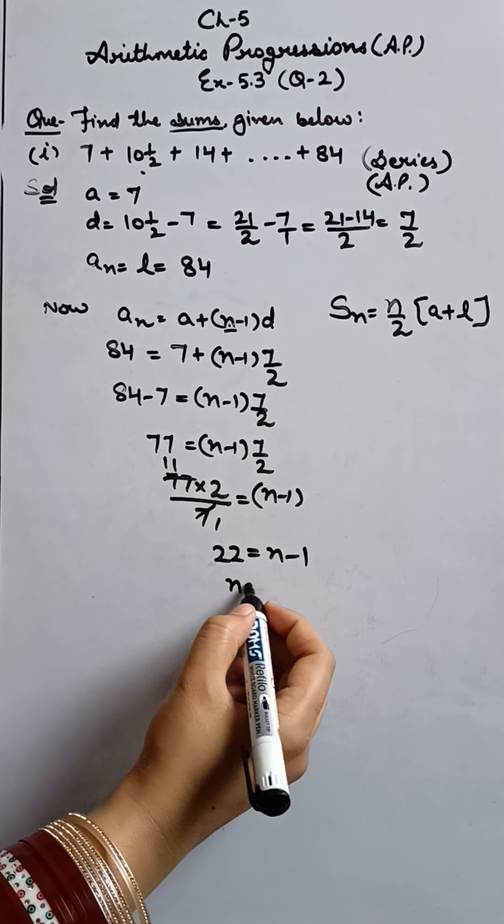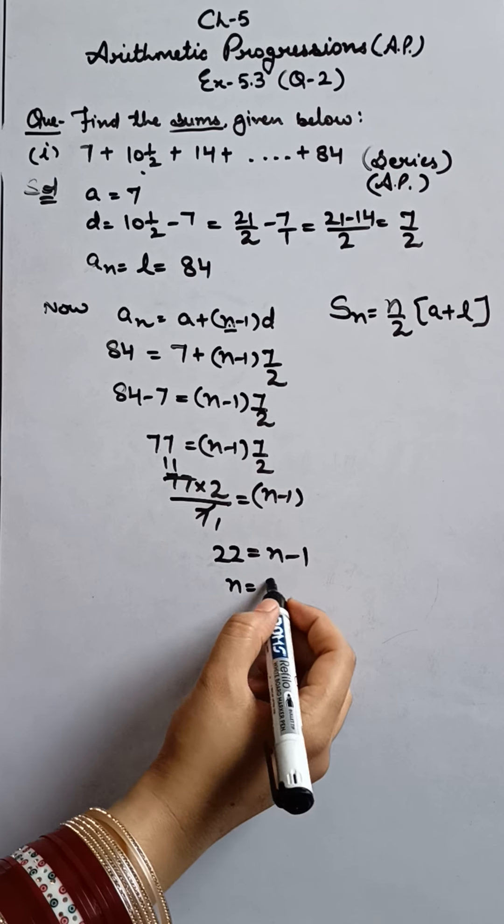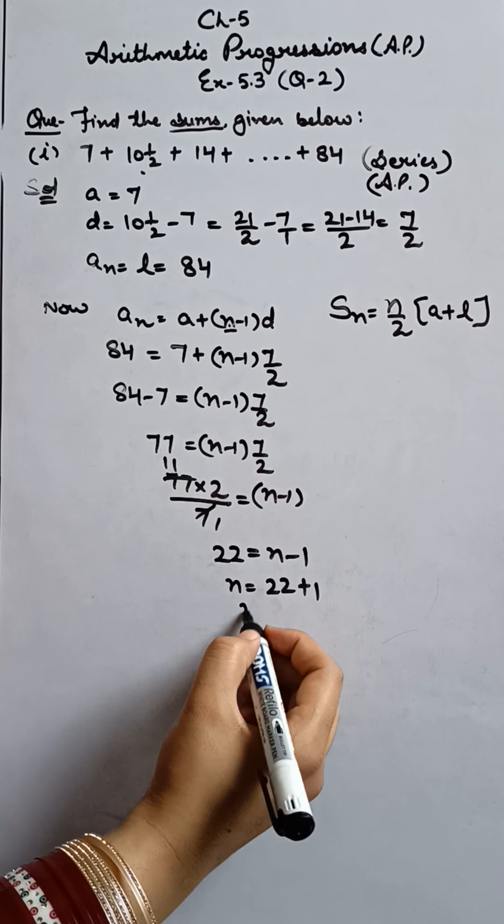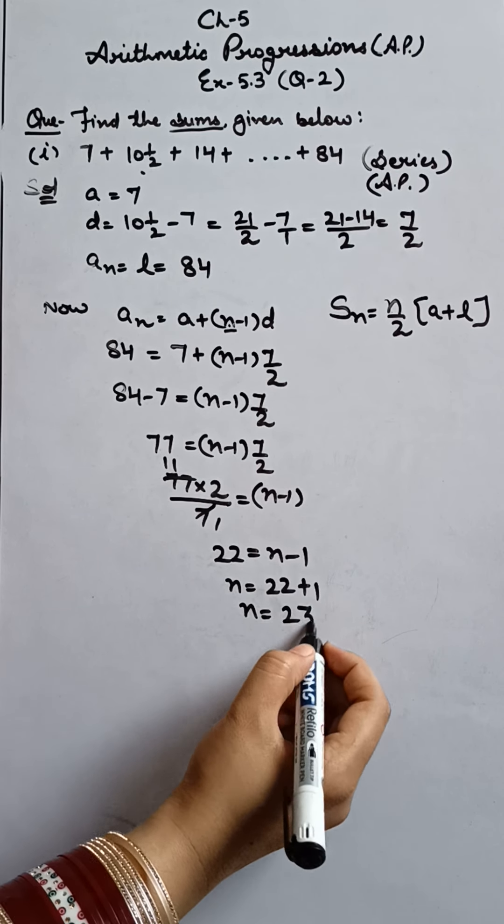So this is not the value of N yet. N minus one is there, which comes to this side and becomes plus one. And the value of N we have is 23.